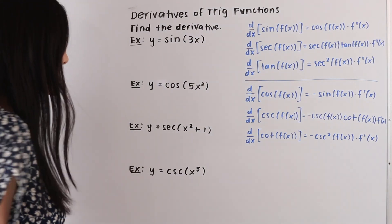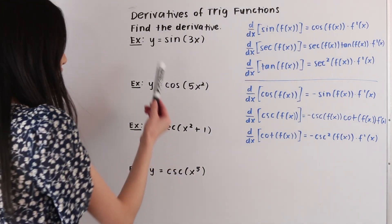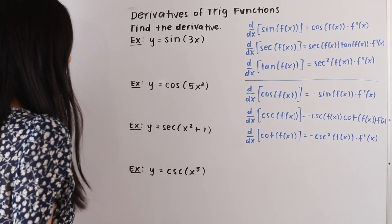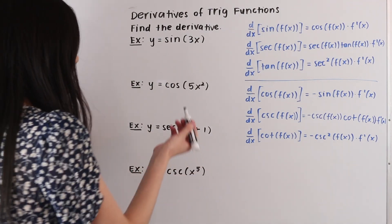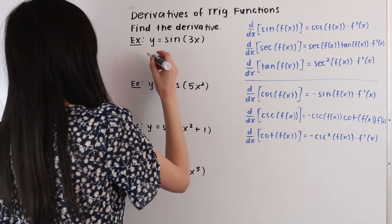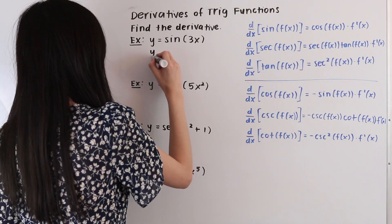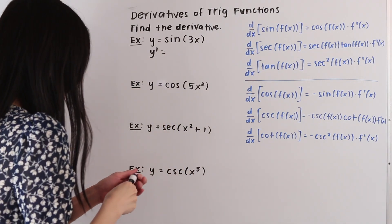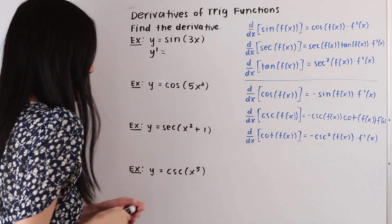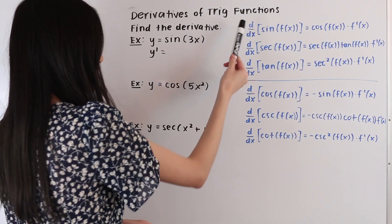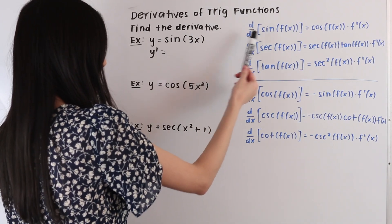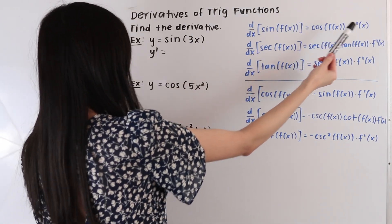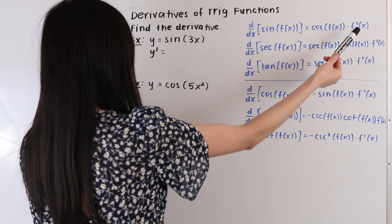So in this first example here, we have the function y is equal to sine of 3x. And so let's go ahead and take its derivative. So we have y prime equal to, and so taking a look at our table here, we see that the derivative with respect to x of sine of f of x is equal to cosine of f of x times f prime of x.